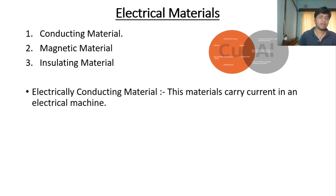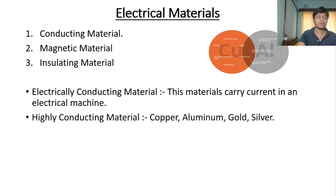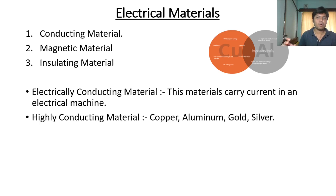Now let us see what electrically conducting materials are. Electrically conducting materials are the materials which carry current in electrical machines. The important properties of electrical conducting material include highly conducting materials — whatever winding we use for electrical machines, that material should be highly conducting. Materials like copper, aluminium, gold, and silver come under the category of highly conducting materials.